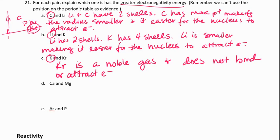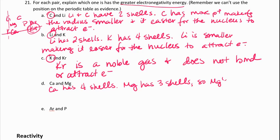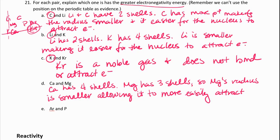Calcium and magnesium are both alkali earth metals. So calcium has four shells, magnesium has three shells, so magnesium's radius is smaller, allowing it to more easily attract electrons. So magnesium would have the higher electronegativity.